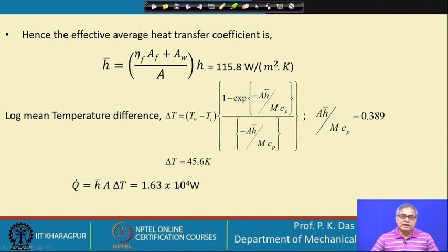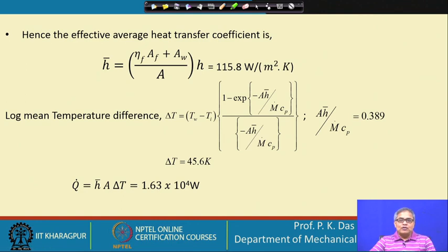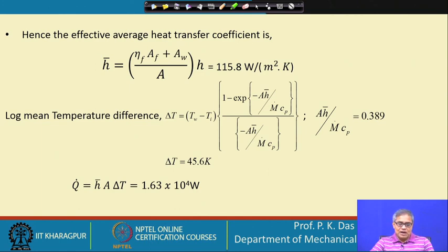The total rate of heat transfer is then Q_dot = H_eff × A × delta_T. Using this formula with all calculated values, the total rate of heat transfer is obtained. In summary: areas were calculated, then Reynolds number, then heat transfer coefficient, and finally the total rate of heat transfer.